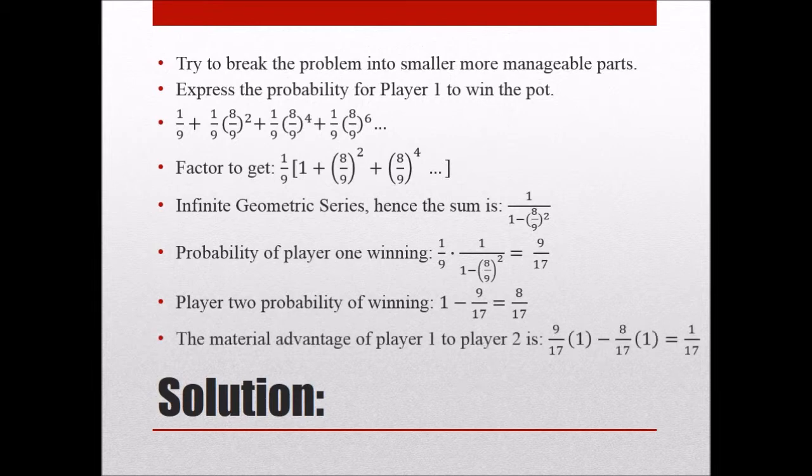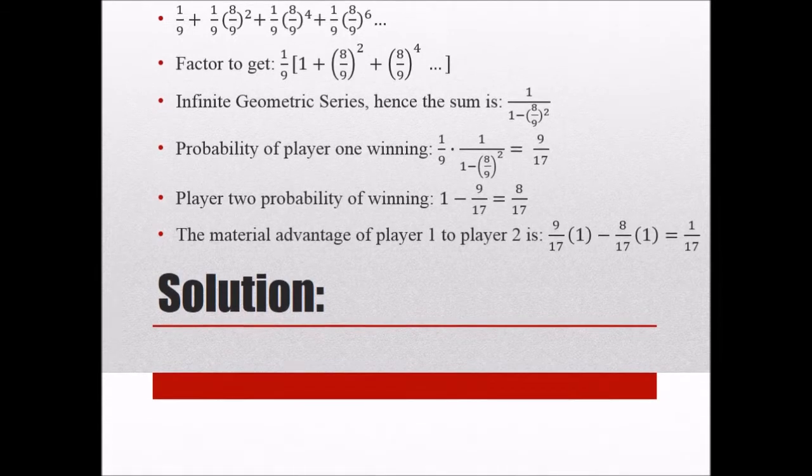So in order to see the difference, we just take the first times the amount of money they put in. So nine over 17 player one put in a dollar and then eight over 17 player two put in a dollar. And you can see that their difference then is one over 17.